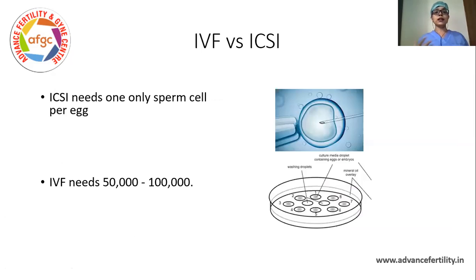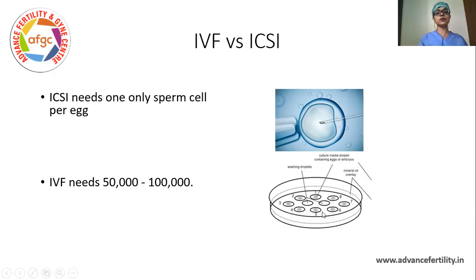Now what is IVF and why is ICSI used? In ICSI it is one egg, one sperm. In IVF — in vitro fertilization — we place droplets of sperms close to 50,000 sperms near each egg, and out of these 50,000 sperms only one sperm will selectively fertilize the egg.